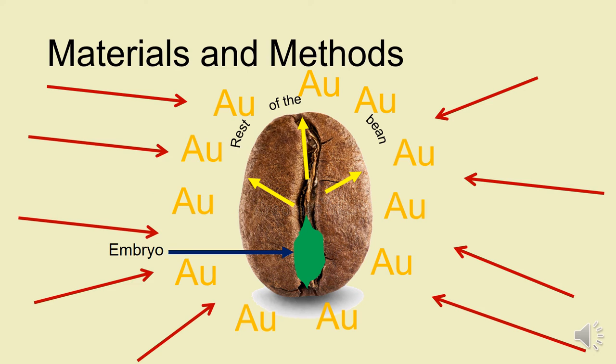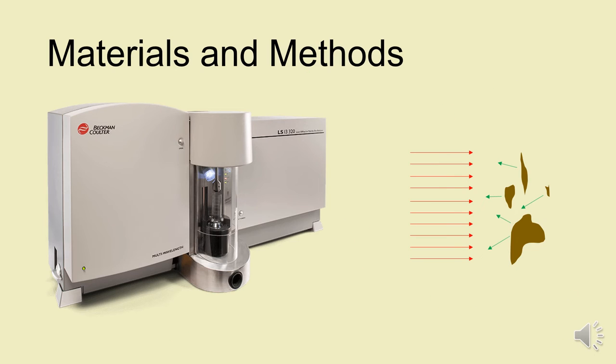Then we used a Beckman-Coulter LS 320 to analyze the particle size distribution of the roasted coffee grinds. Basically how it works is it fires a laser and then light bounces off your different particles and then the computer can calculate from the angle from which the light bounced back, can calculate the particle sizes.